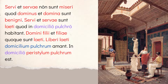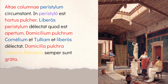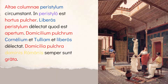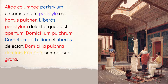Then: liberi laeti domicilium pulchrum amant — the happy children love the beautiful house. Notice laeti matches liberi in case, number, gender. Then: in domicilio peristylum pulchrum est — in the house there is a beautiful peristyle, a colonnade or courtyard with columns. Then: alti columnae peristylum circum stant — high columns stand around the peristyle. Notice alti is matching columnae with the matching endings.